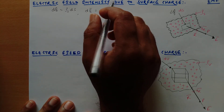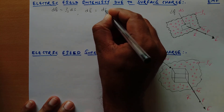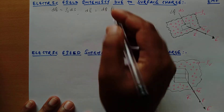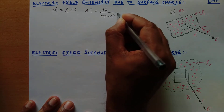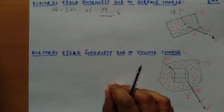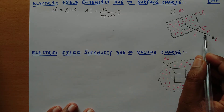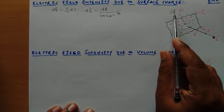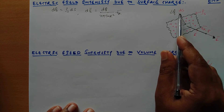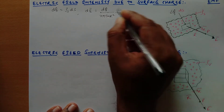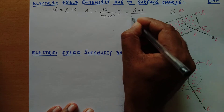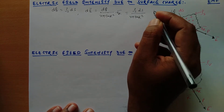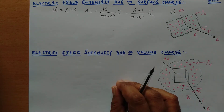This is given as dq upon 4πε₀r² times ar. So this is the differential amount of the electric field at a point P due to the differential charge on the differential surface ds. Further, we can replace dq with ρs·ds, giving us dE = ρs·ds / (4πε₀r²) times ar. Here r is the distance to the point where we find the electric field intensity, and ar represents the unit vector showing direction.